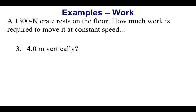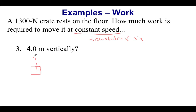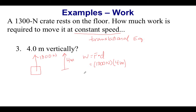For our third example, we're going to lift the same 1300-newton crate vertically off the floor. To overcome gravity and lift at constant speed, this is translational equilibrium — the upward force applied equals the downward force, so the upward force is 1300 newtons. Since we're lifting a distance of 4 meters in the same direction, work equals force times distance: 1300 newtons times 4 meters equals 5200 joules, and it is positive since they're in the same direction.